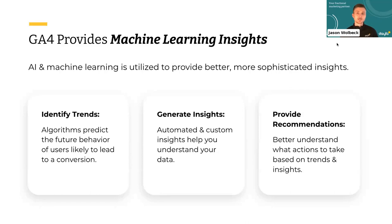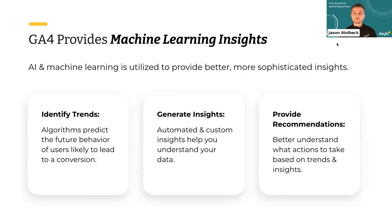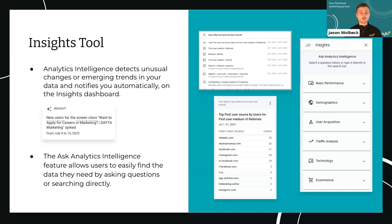The next part is to generate insights — there are automated capabilities, and you can also set up custom insights that will prompt you right within the platform and help you understand your data, telling you when it sees specific things of interest. And then it'll help provide recommendations, taking all the trends it's seen and the insights to really help you better understand what actions you should take. This is one of my favorite features of GA4 — the insights tool — which really utilizes that machine learning to make your life a little bit easier.